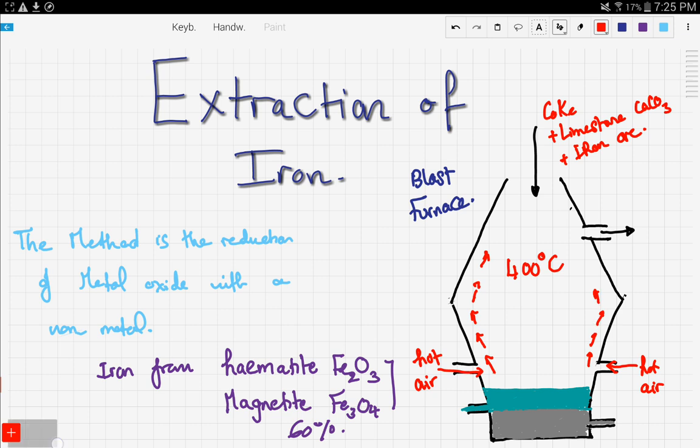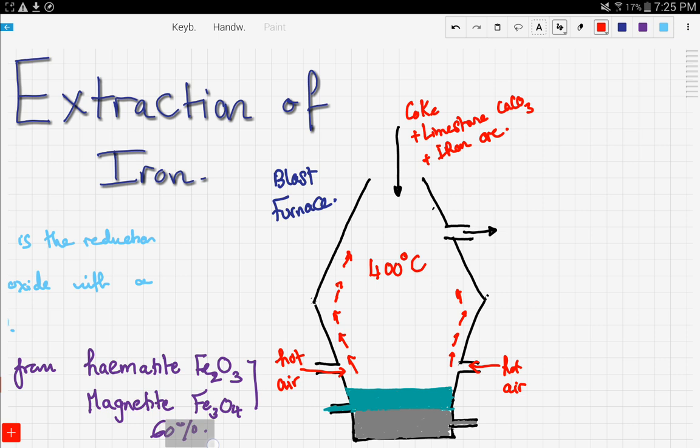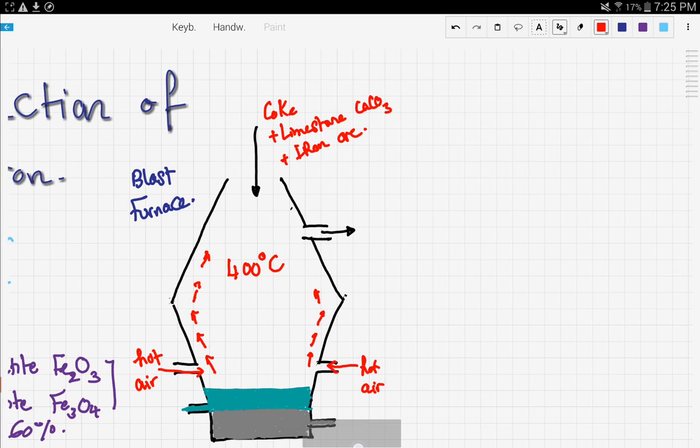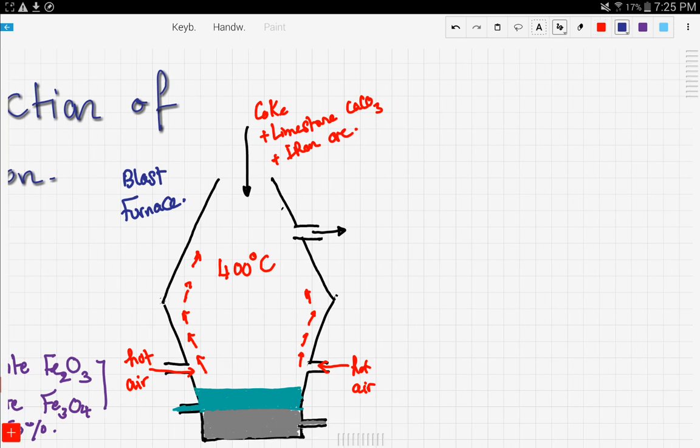Now let's take a look at some of the reactions that occur, and you guys have to know these reactions by heart. The first reaction that occurs is the reaction of coke, which is carbon solid, reacting with the hot air coming into the blast furnace, and this would yield carbon dioxide gas.